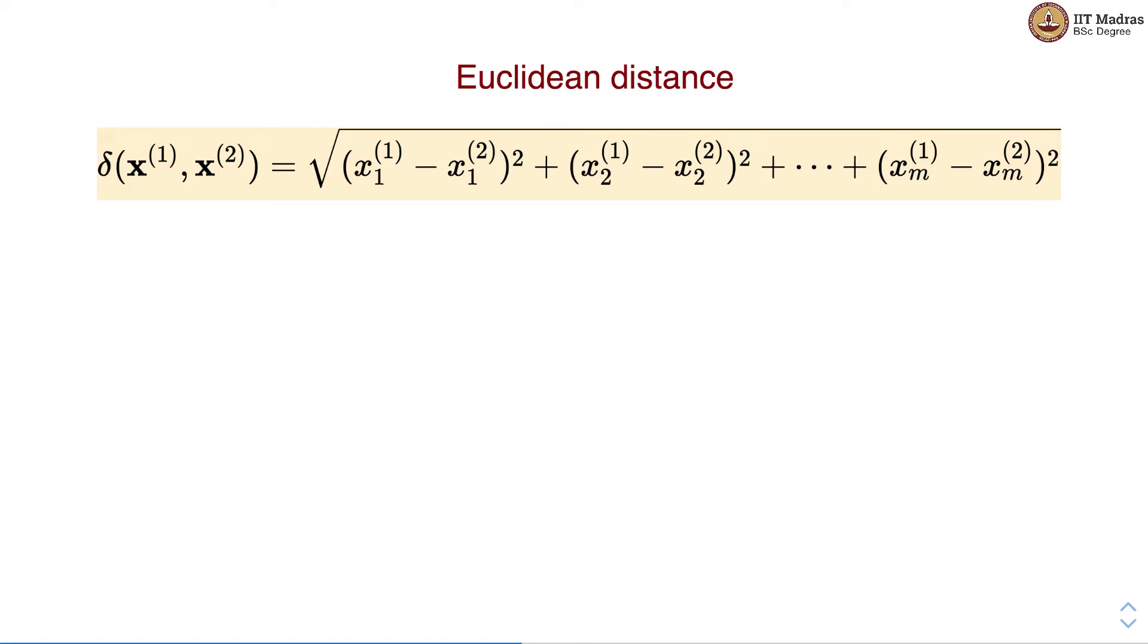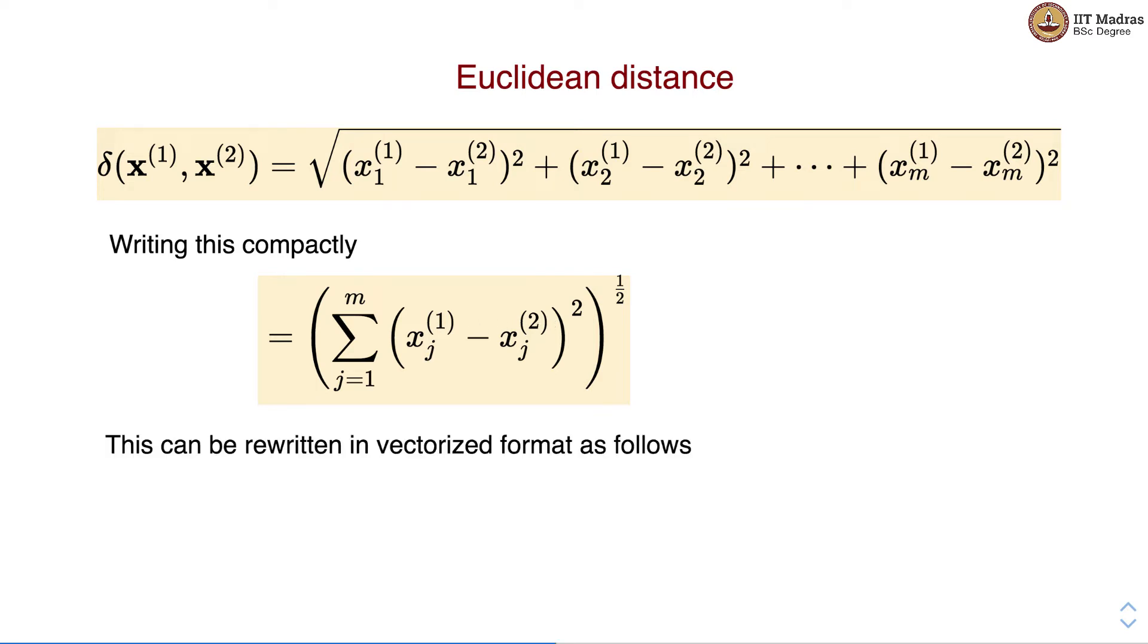We can write Euclidean distance compactly as the square root of sum over m features of the square of the difference between feature j of both points. This can be rewritten in vectorized format as follows: we first take the difference between both vectors x1 and x2, take the transpose of the difference and multiply this transpose with the difference between two vectors, and then take the square root of this multiplication.